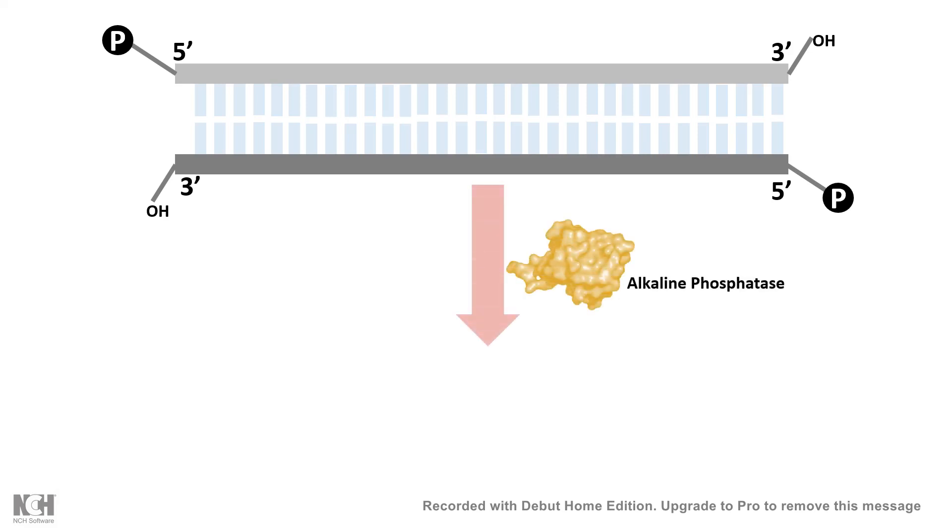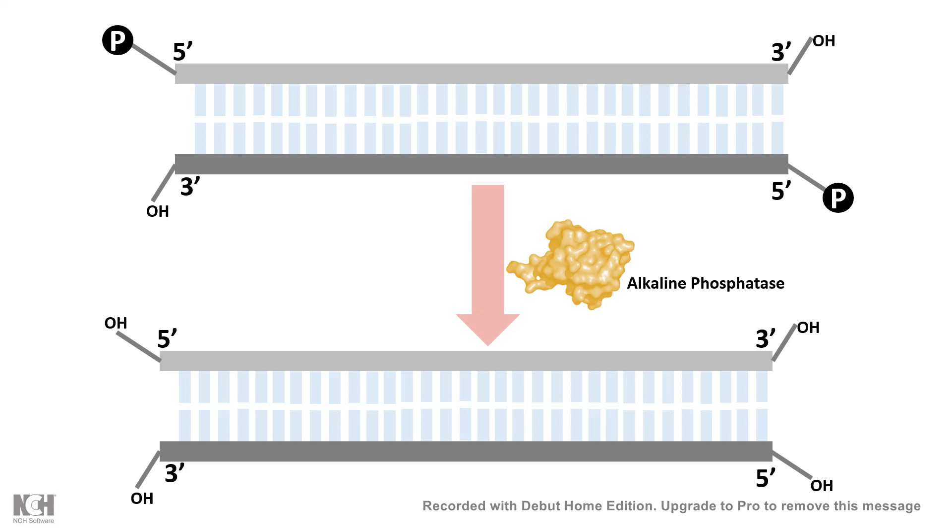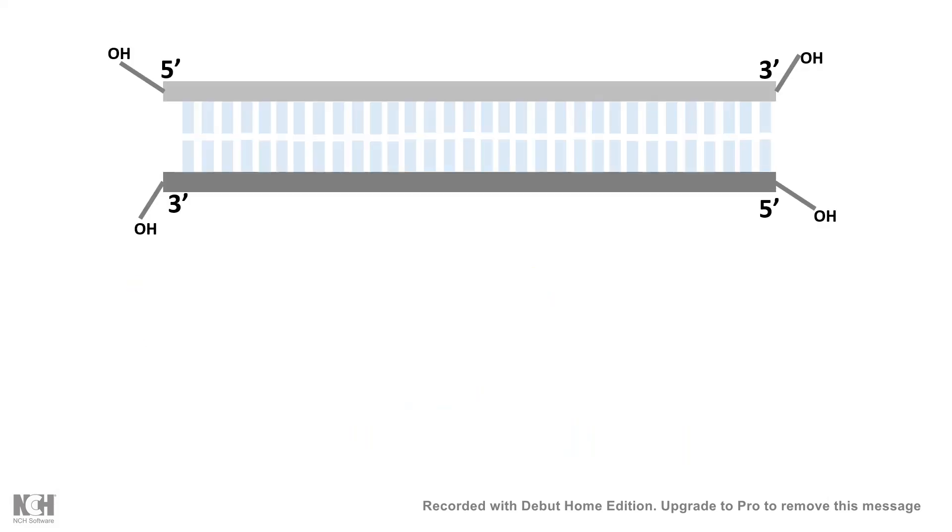So, what we can do is first use alkaline phosphatase to cleave off those 5' phosphate and add hydroxyl group into that. But now, we would re-phosphorylate it with the help of polynucleotide kinase.